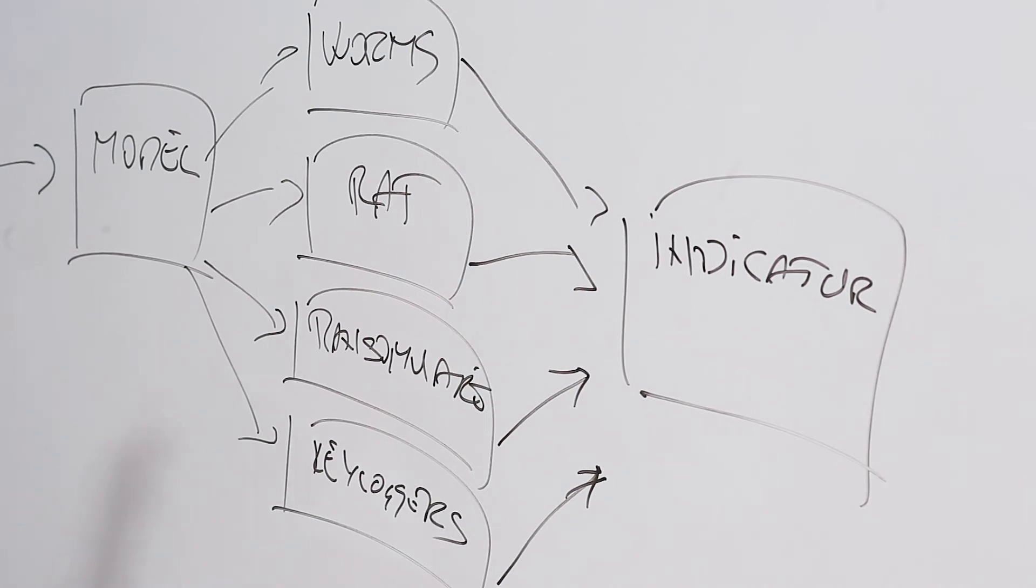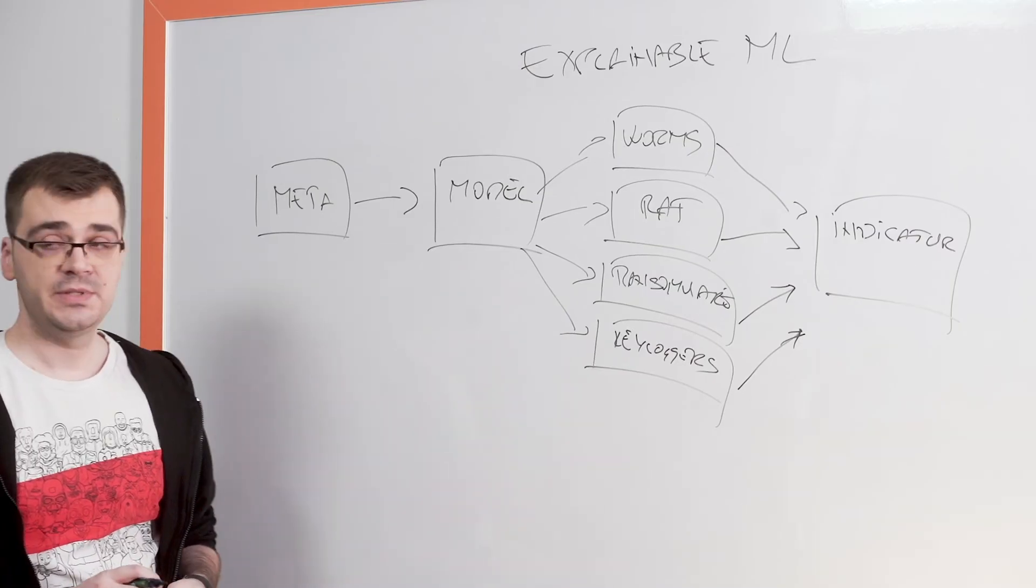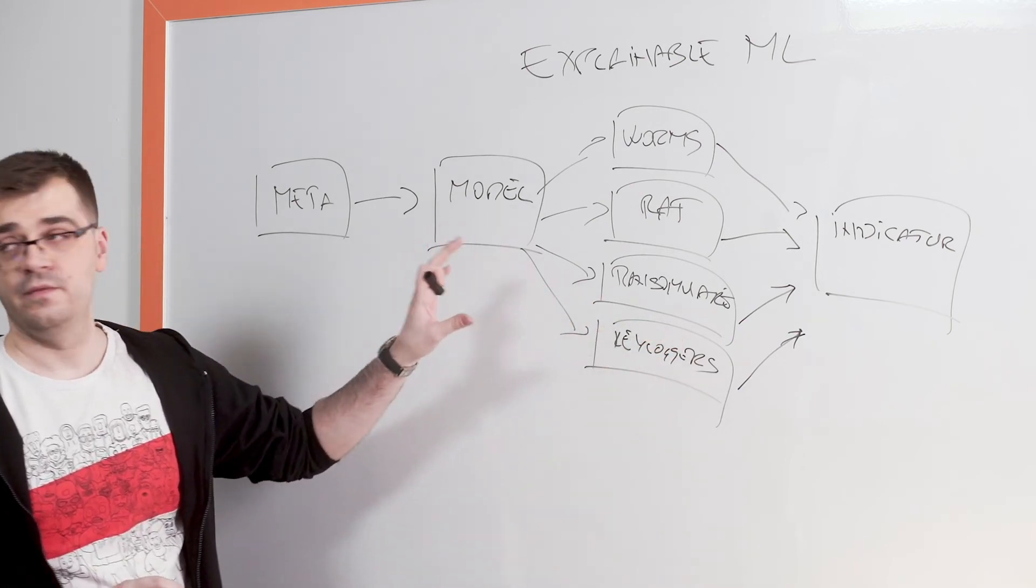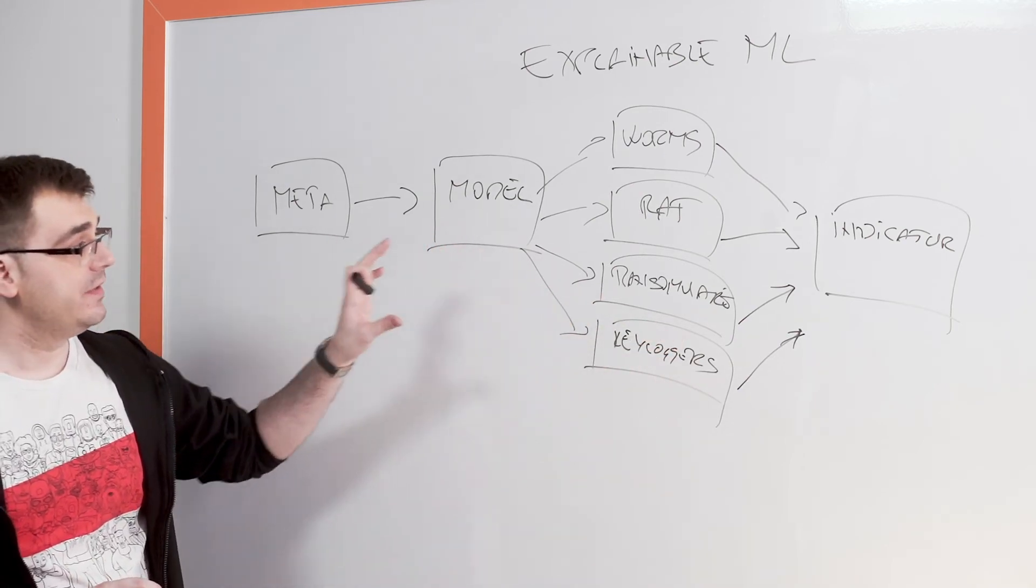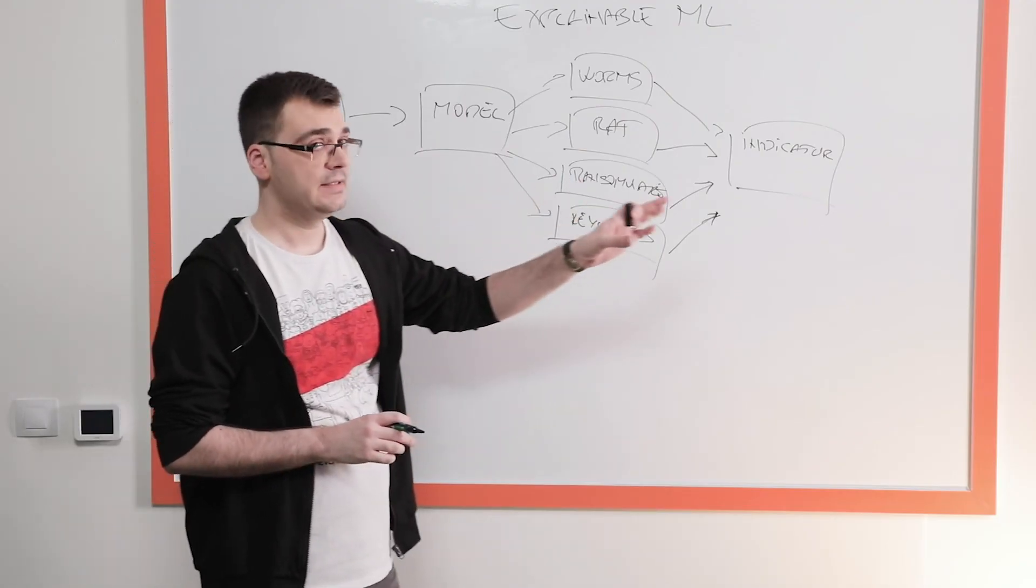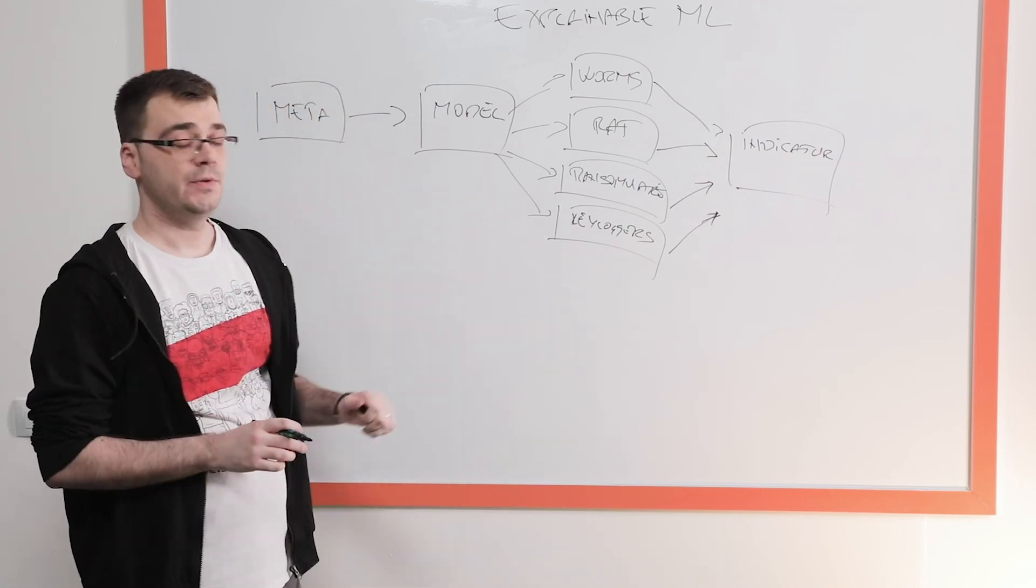And that's how explainable machine learning model helps the analysts understand the reasoning behind all of these decisions, all of these classifications. And that's how it actually helps them plan their next step, which is how to remediate these threats.